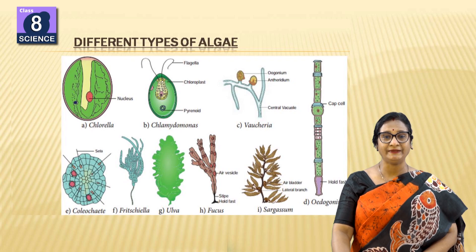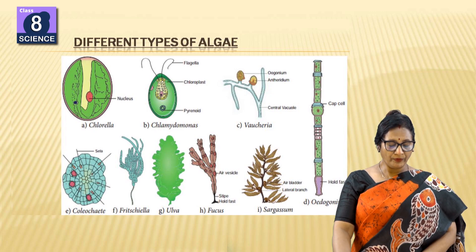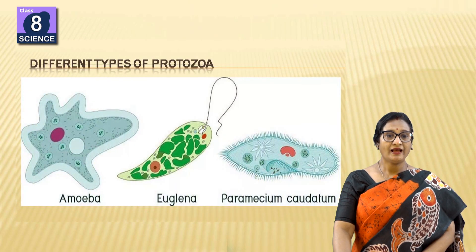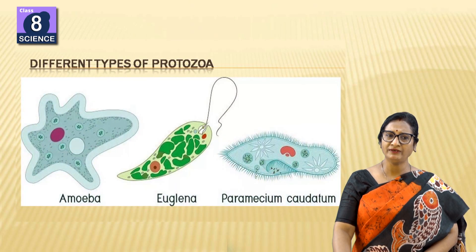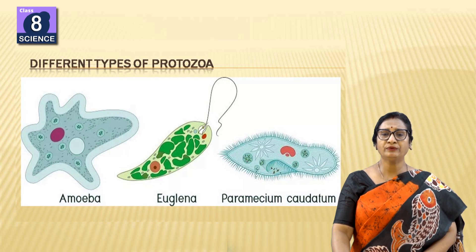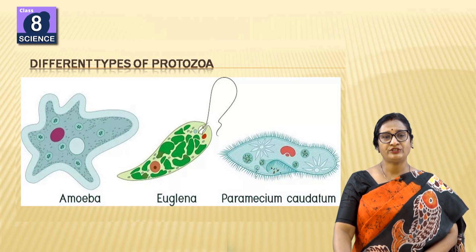These are all different types of protozoa. Very common examples are Euglena and Paramecium, which are protozoans.